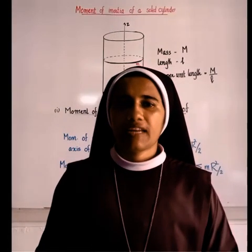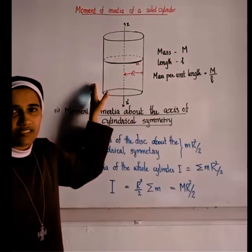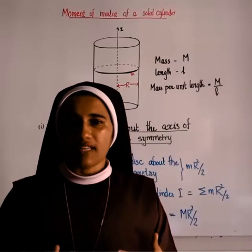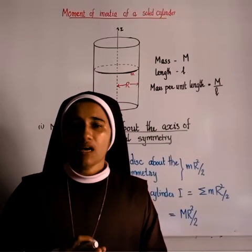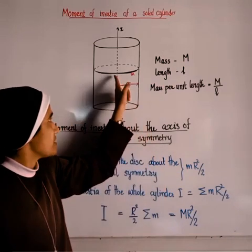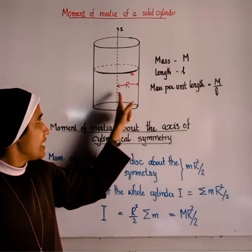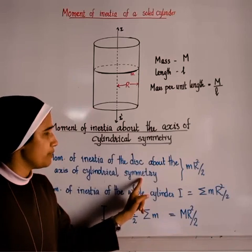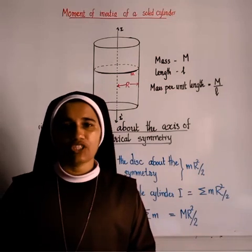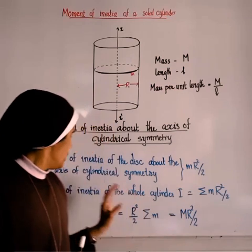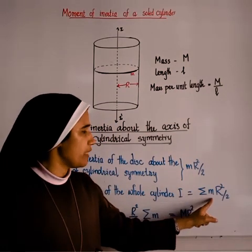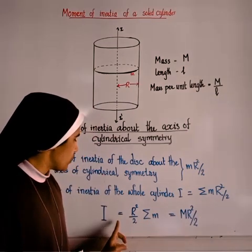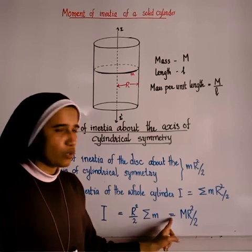Now let us learn the moment of inertia of a solid cylinder of mass M and length L. The cylinder is made of a large number of thin disks placed one over another. For one such disk of mass m and radius R, the moment of inertia about the axis of cylindrical symmetry equals mR²/2. Summing over all disks: I = Σm·R²/2 = (R²/2)·ΣM = MR²/2.